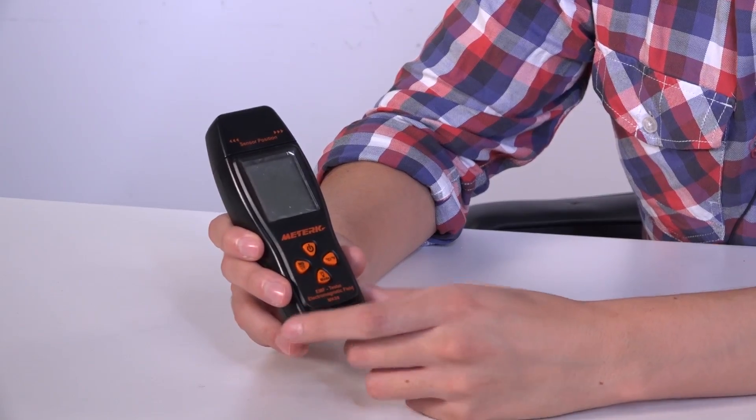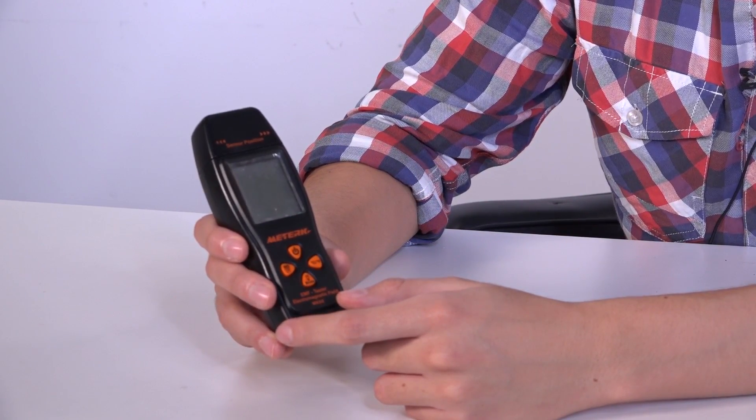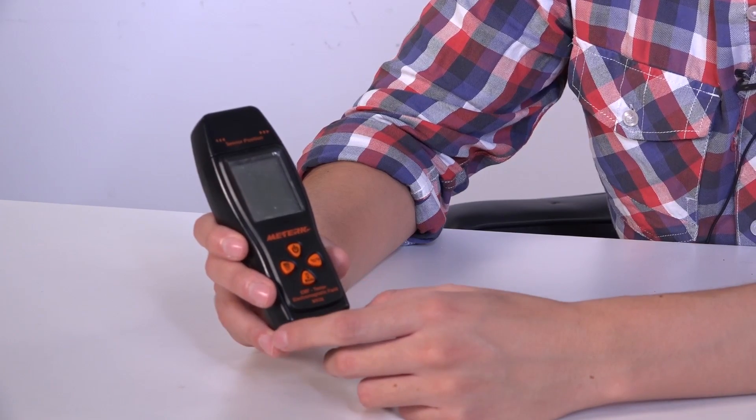To start with, we have four buttons here and each of the buttons have two functions: the short press function and the long press. So we have four buttons here, each of them have a short press and a long press function.